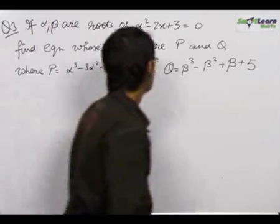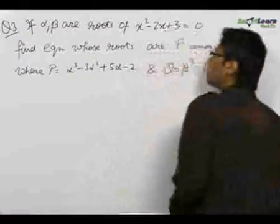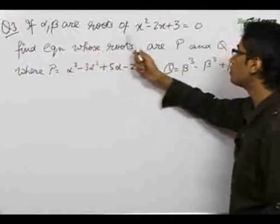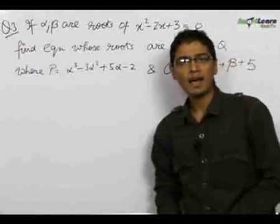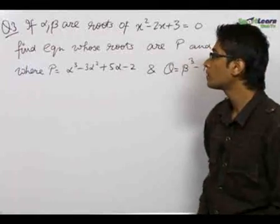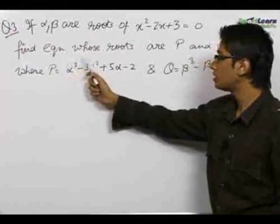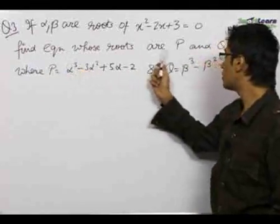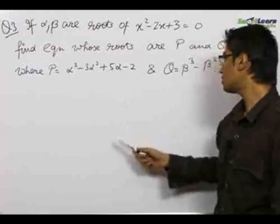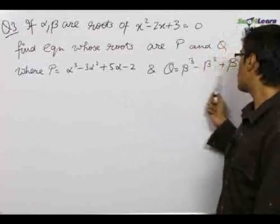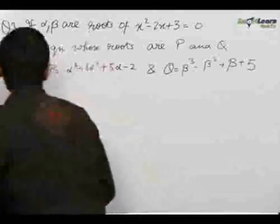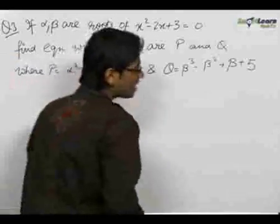In our third problem, we are given that alpha and beta are the roots of the equation x² - 2x + 3 = 0. We need to find the equation whose roots are p and q, where p and q are given by specific expressions.